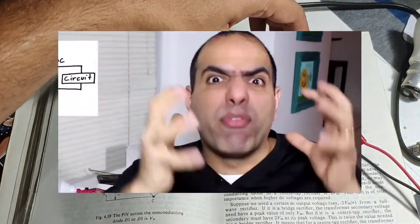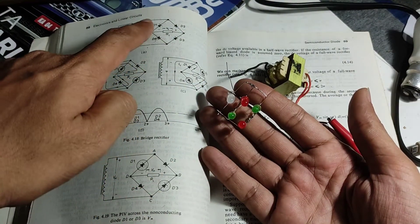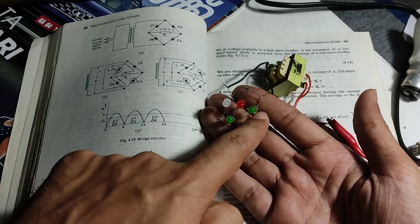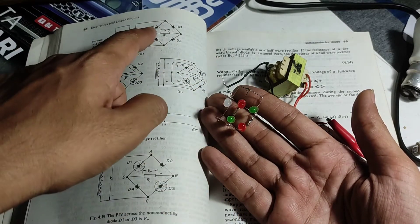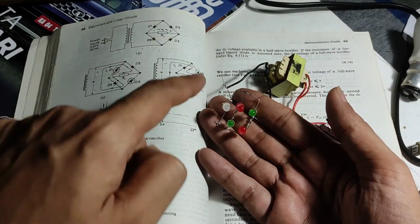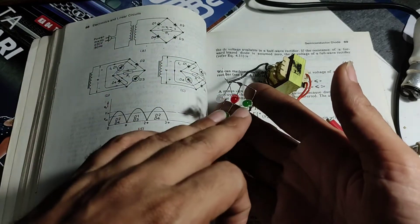Now this is a full bridge rectifier made out of LEDs. These two diodes are these two diodes, and these two are these two diodes. Red and red, green and green - they represent the diodes on all four corners.